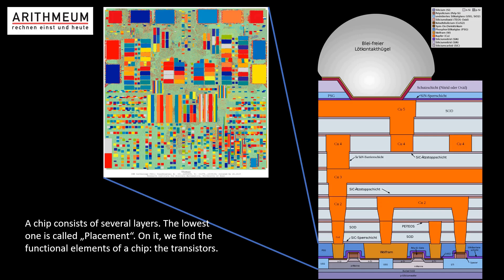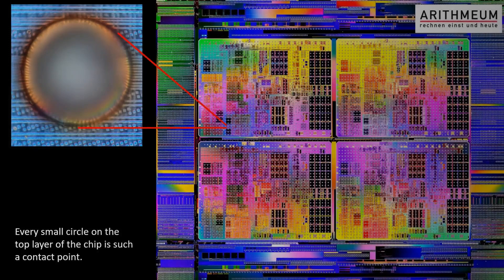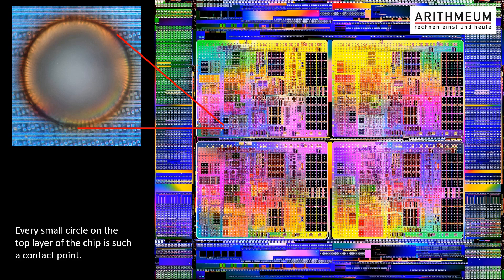These transistors have to talk to each other, which means they have to be connected by wires. The wiring is in the layers above — it is called routing. At the very top we can see a solder bump which sets up contact between the chip and the outside world. On the surface of a finished chip there are large numbers of those contact points.